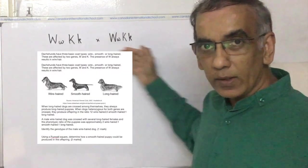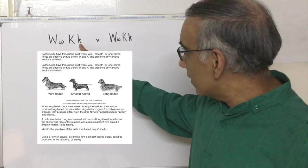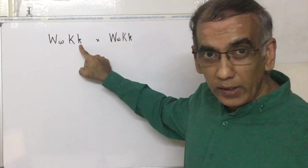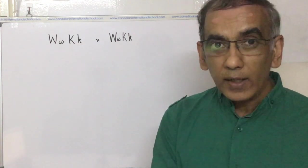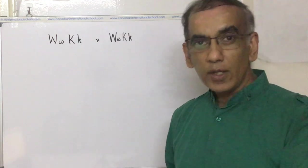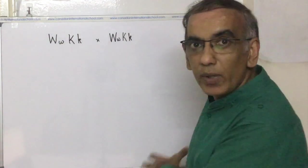If we lay out the Punnett square using the assumption that when a dog is small K, small K, it becomes long-haired, then we would confirm that the long-haired dog is, in fact, two small Ws and two small Ks. Let's fill out this Punnett square.